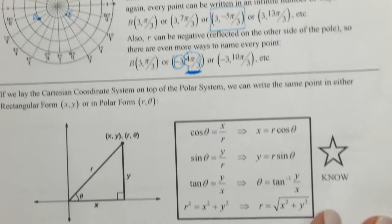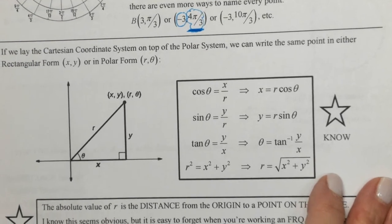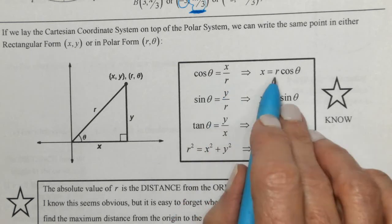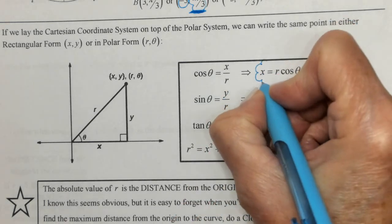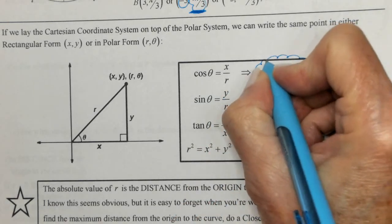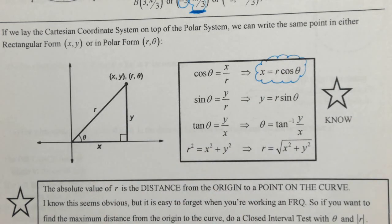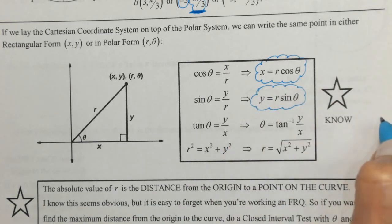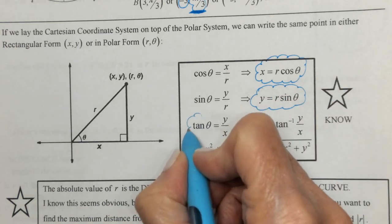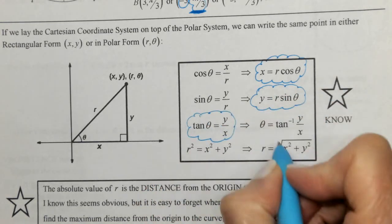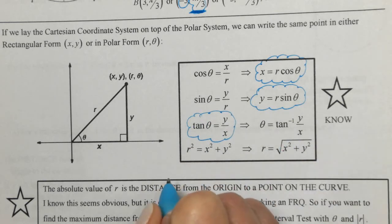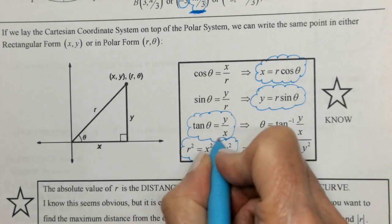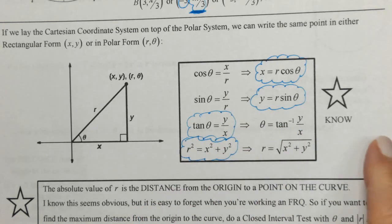You need to know these conversions. Cosine of theta is x over r, so x = r·cos θ — that comes from SOH-CAH-TOA using a right triangle. y = r·sin θ. Tangent of theta is y over x, which means theta = arctan(y/x). And r² = x² + y² from the Pythagorean theorem.